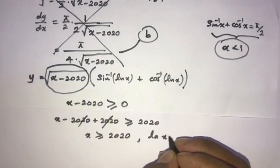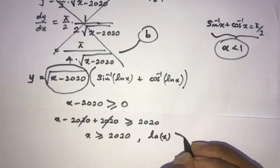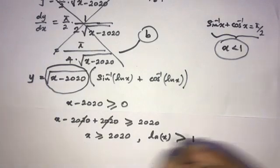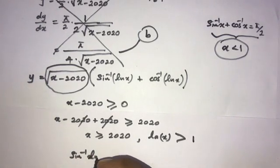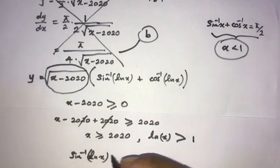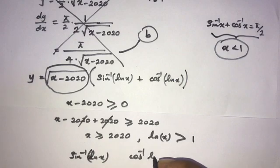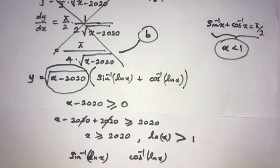definitely natural log of x is greater than 1. So inverse sine of natural log of x and inverse cosine of natural log of x don't exist. So the given function is not defined. So if a function is not defined somewhere